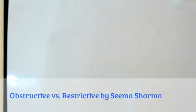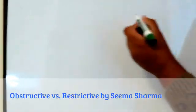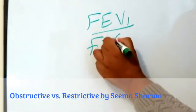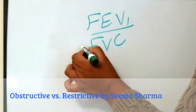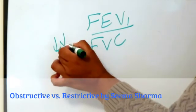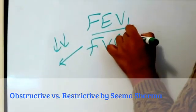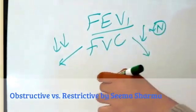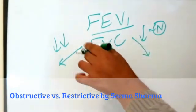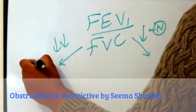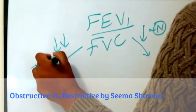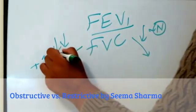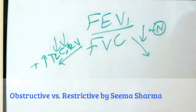We're going to start this flowchart out with FEV1 over FVC. If it is much decreased, plus you have an increase in total lung capacity and residual volume, you have an obstructive disease.